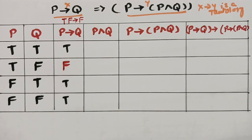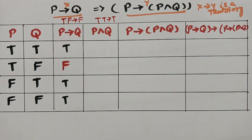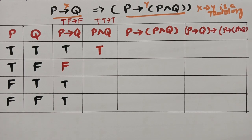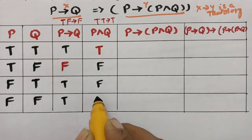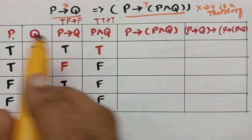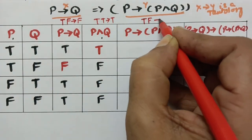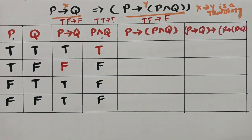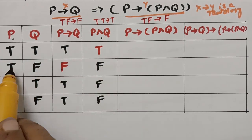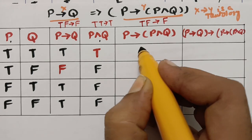For p∧q (conjunction): if there are two trues, immediately write true. There are two trues in the first row, so write true. There are no other two-true pairs, so the rest are all false. Then for p→(p∧q): checking true-false pairs — there is one true-false, write false. The remaining entries are all true.